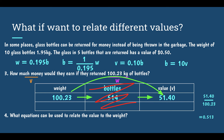That's our constant of proportionality going from weight to value. So if I had W, I would multiply that by 0.513 to get my value. One of my equations would be V equals 0.513 times W.